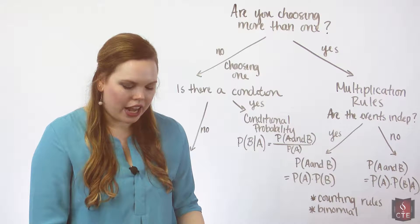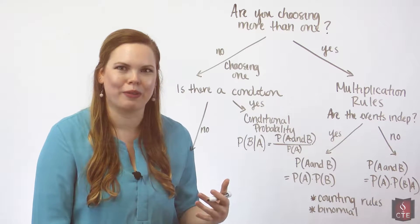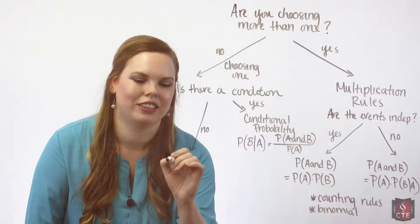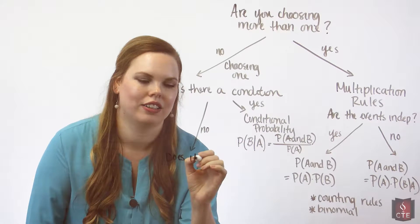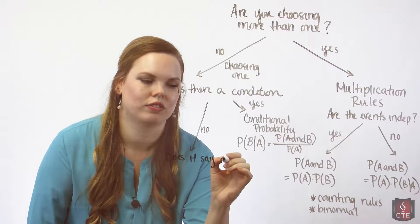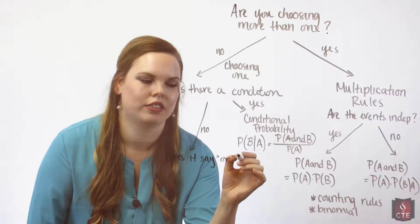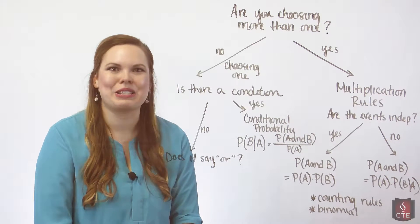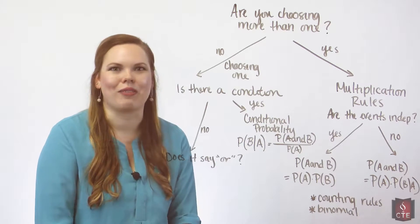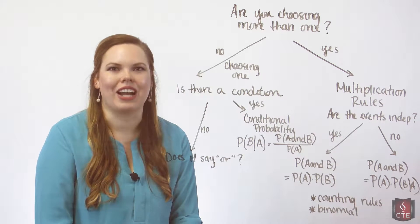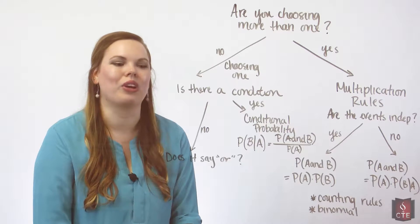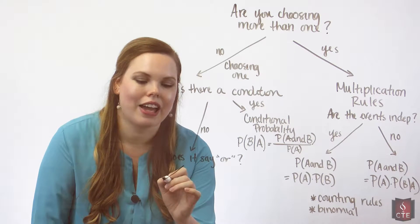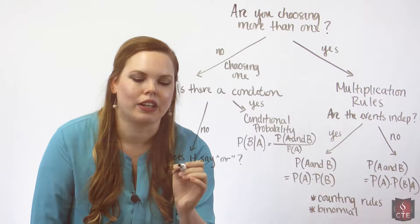If there's no condition, the next question is: does the probability problem say 'or'? For example, what's the probability of getting a two or a three when you roll a die? Or what's the probability of a king or a queen? If the answer is yes, we use our addition rules.